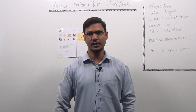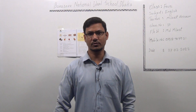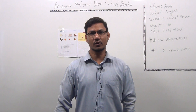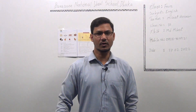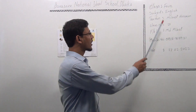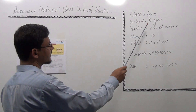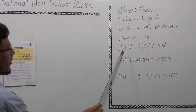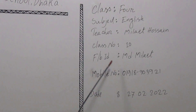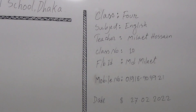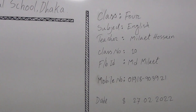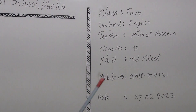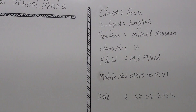Hey students, welcome to B&IS Home School. Today, I am Mila Thussain, going to take class on Class 4, subject English, class number 10. My FBID and other information you will find here. Today is 27 February 2022.